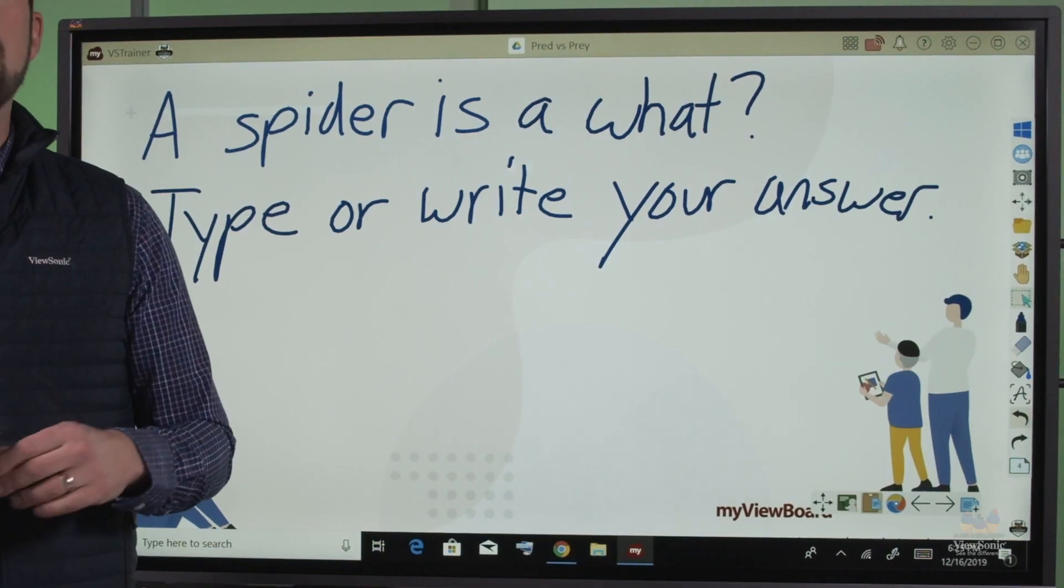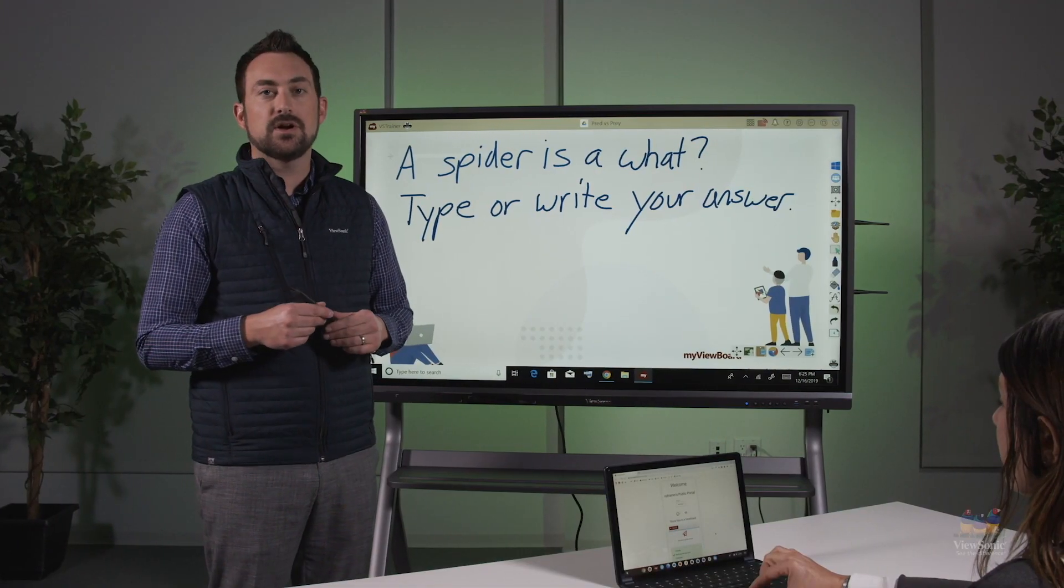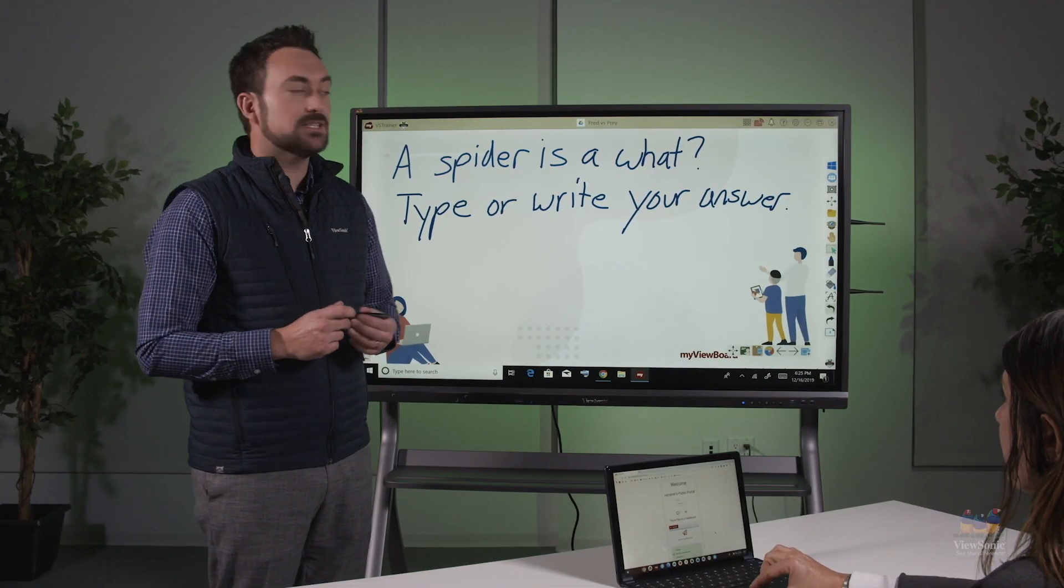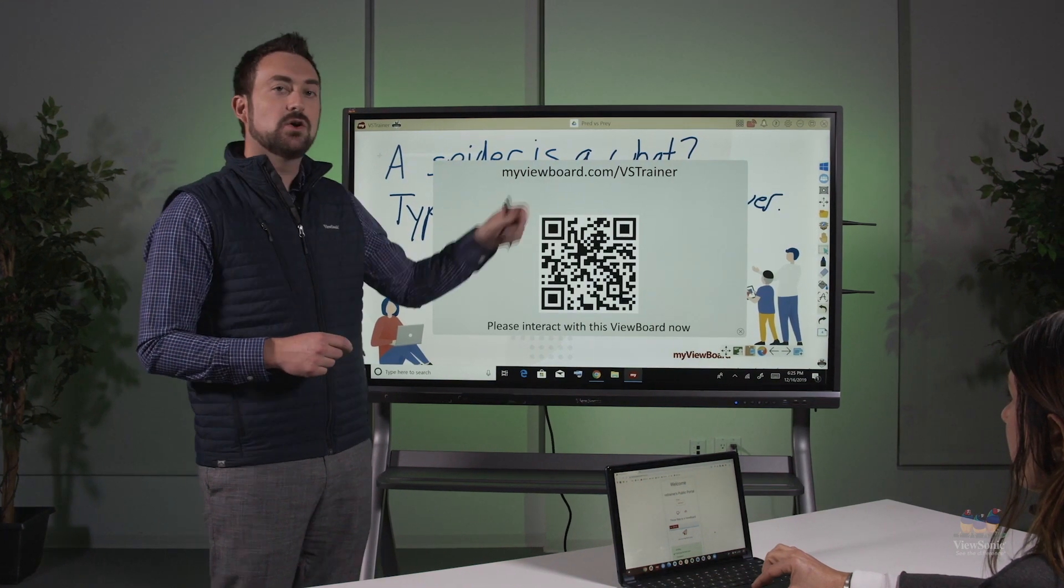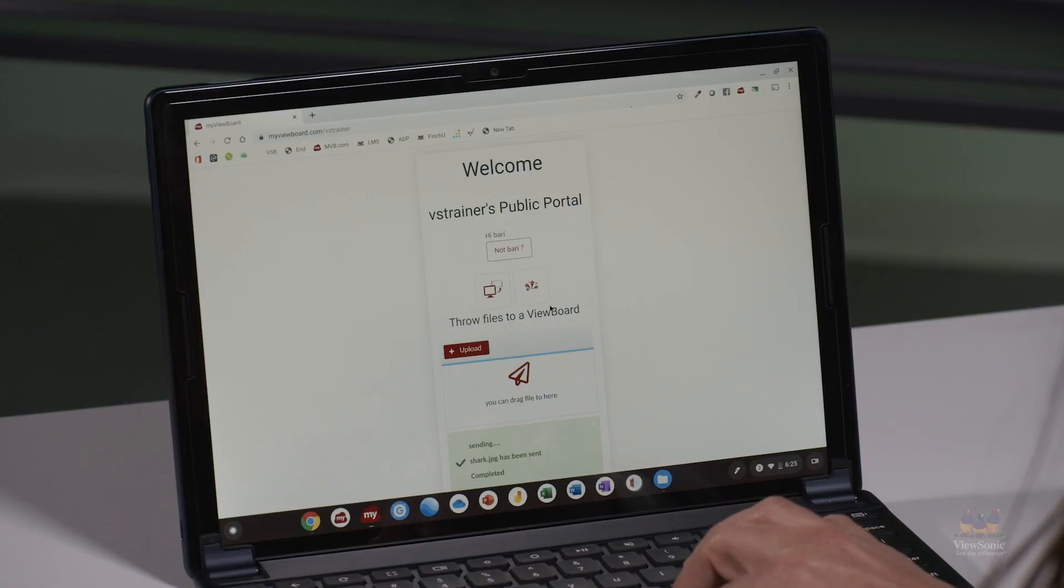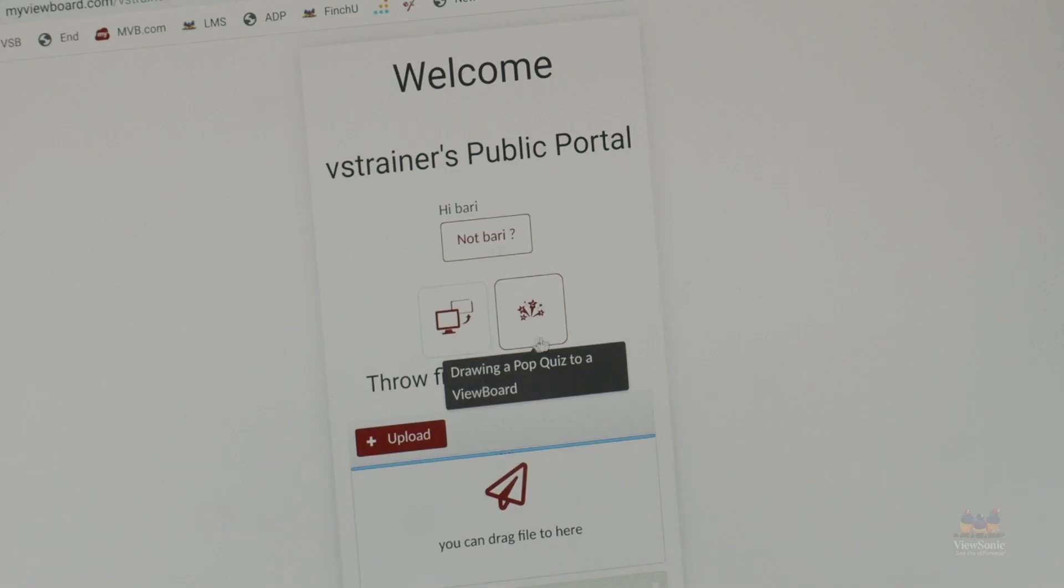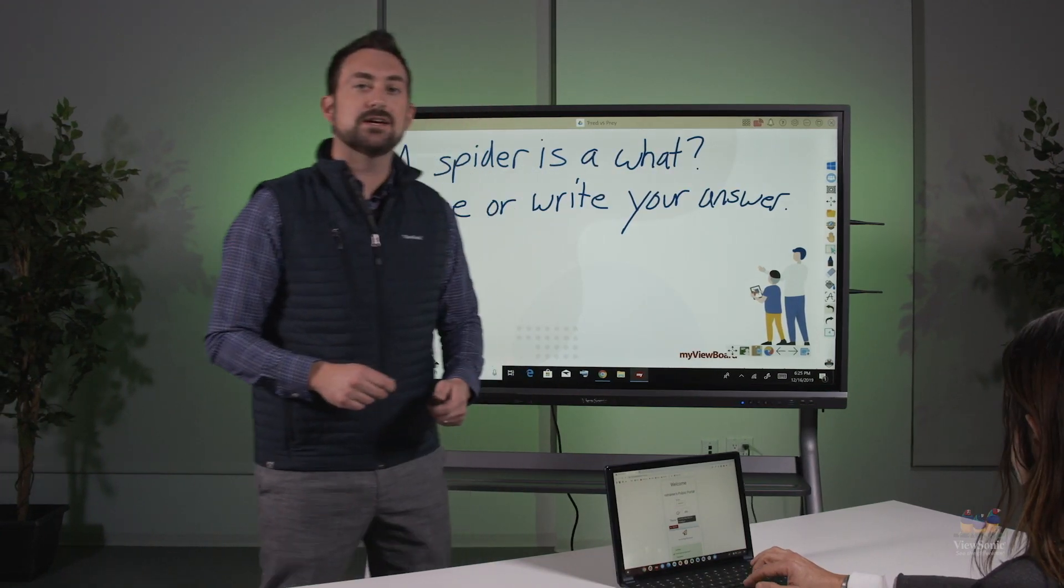On this page, we're going to do a quick check for understanding to see if kids are following us on Predators vs. Prey. They're going to access this through the board public portal which again is in the top left. Go to that URL and then you're going to look for the icon that looks like fireworks but with letters in it, ABCD. This is the pop quiz tool for the kids.